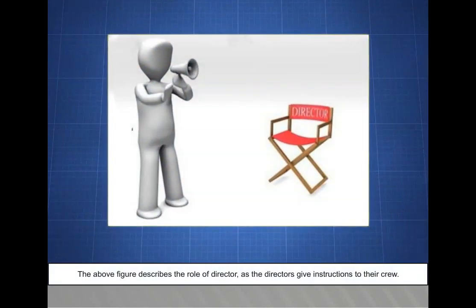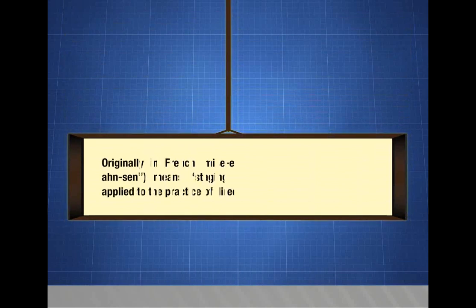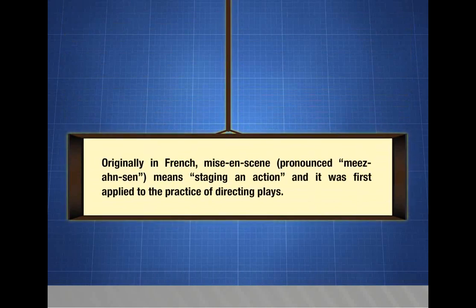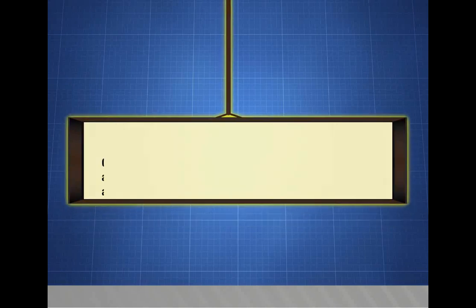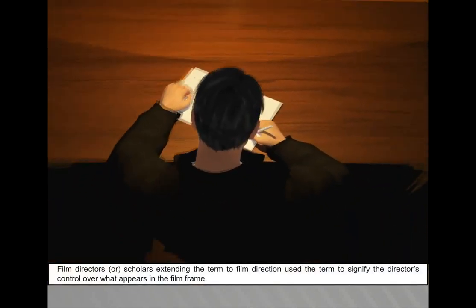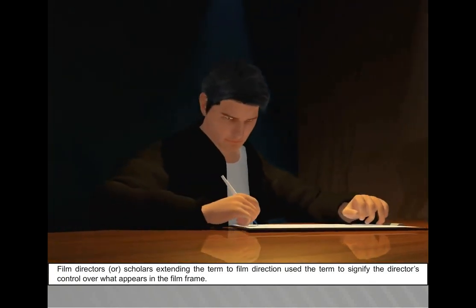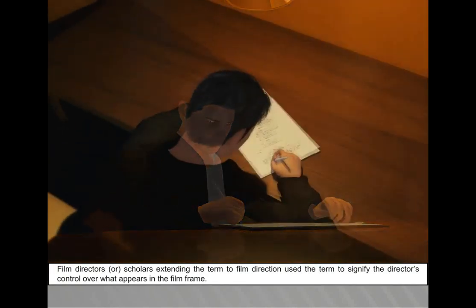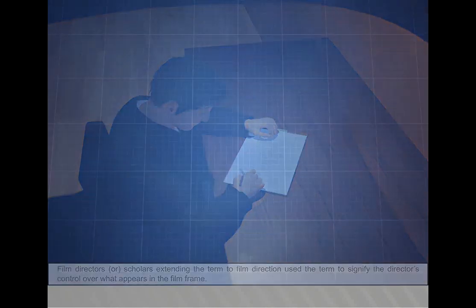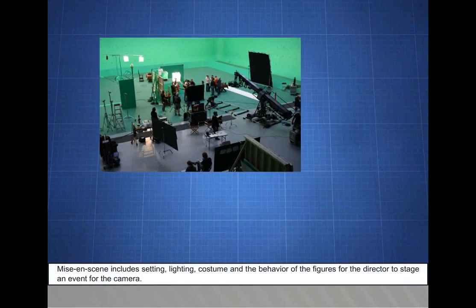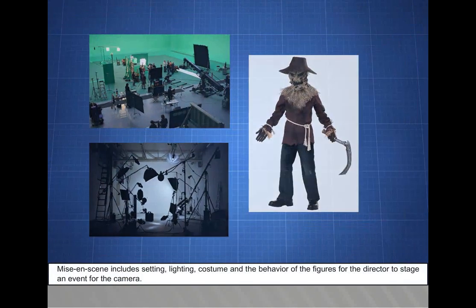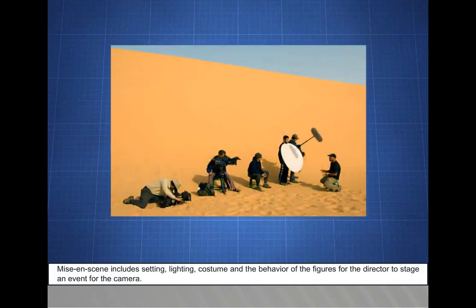The director gives instructions to their crew. Originally in French, 'Mise-en-scène' means staging and action, and it was first applied to the practice of directing plays. Film directors extended the term to film direction to signify the director's control over what appears in the film frame. Mise-en-scène includes setting, lighting, costume, and the behavior of figures for the director to stage an event for the camera.